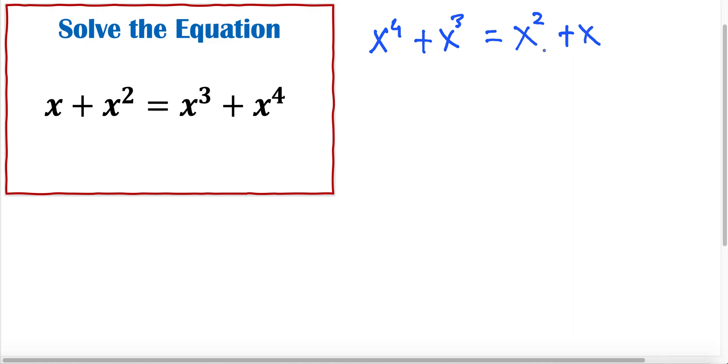If I'm subtracting both sides by x squared plus x, this equation takes the following form: x to the 4 plus x cubed minus x squared minus x equals 0. Since every term has x, we can factor x. So x times x cubed plus x squared minus x minus 1 equals 0.